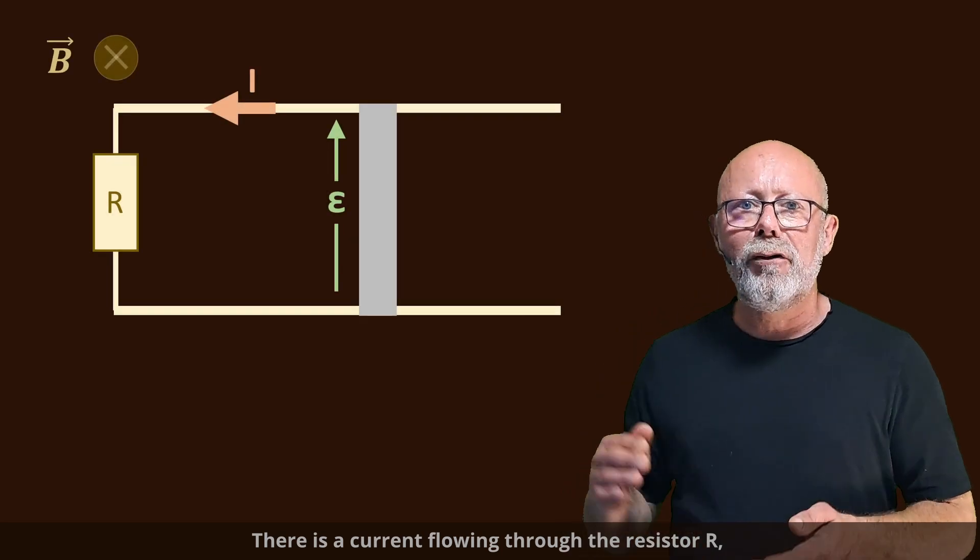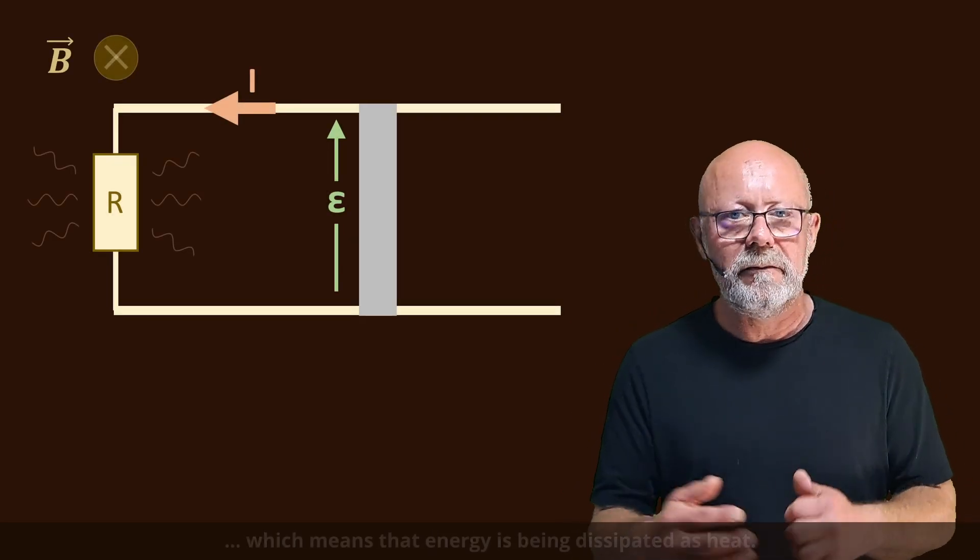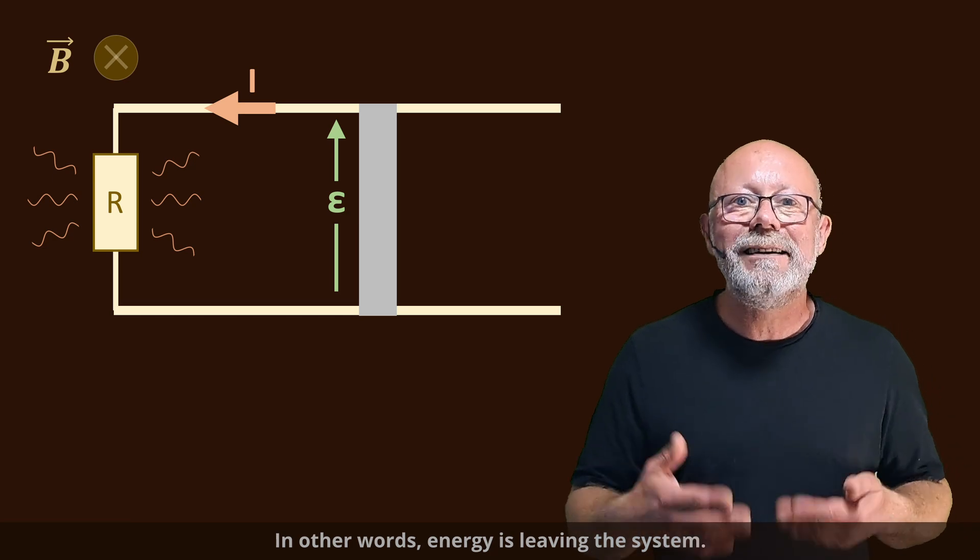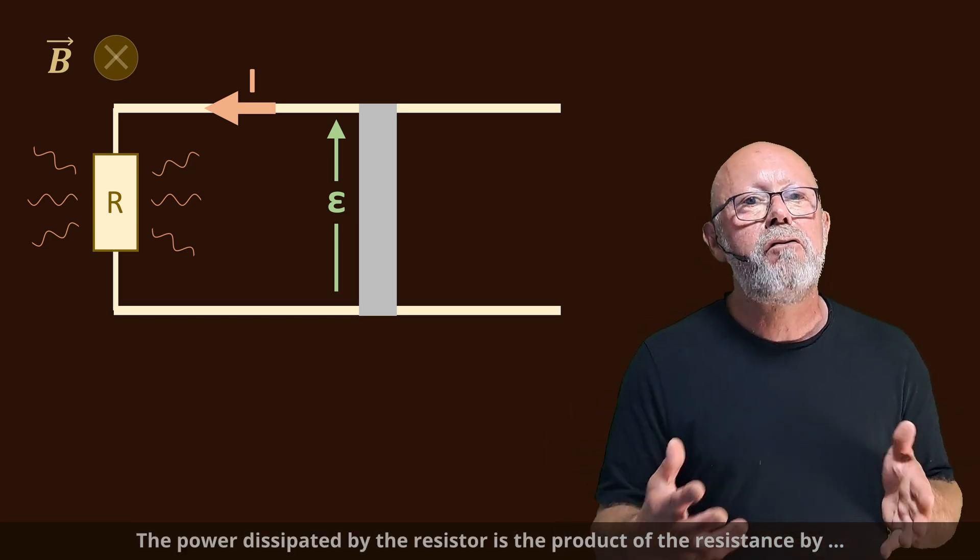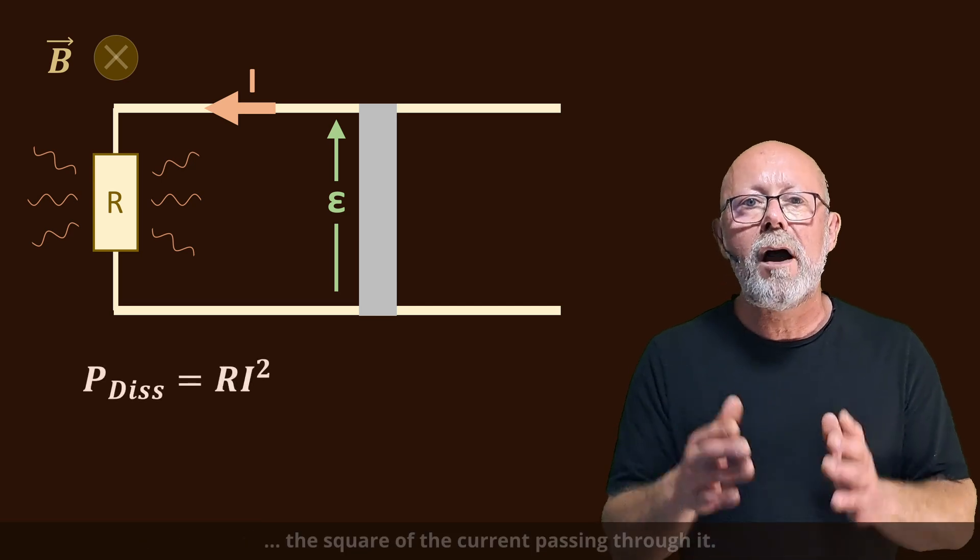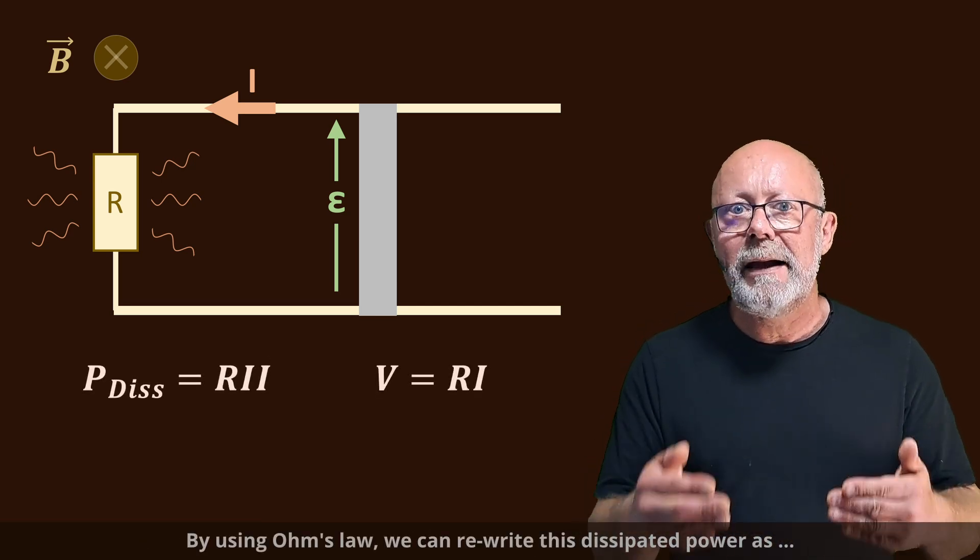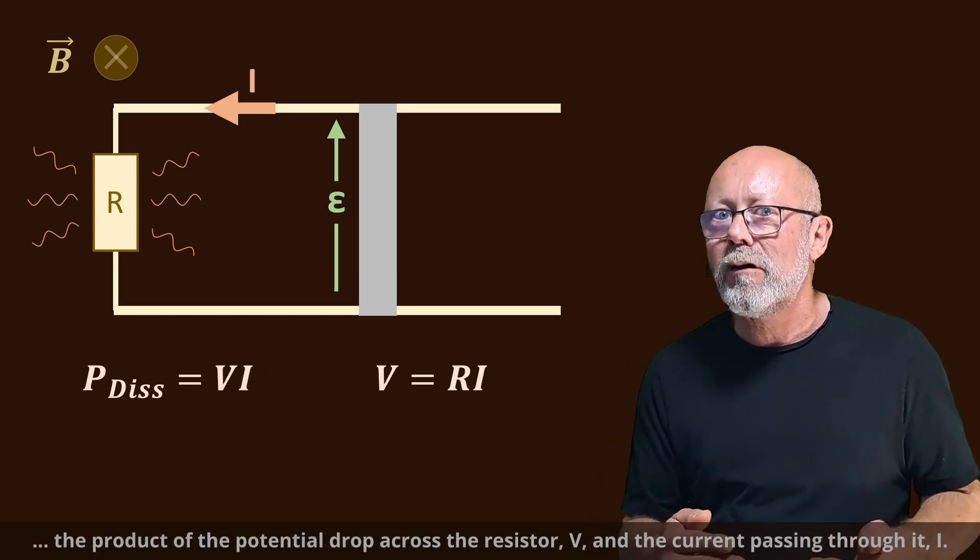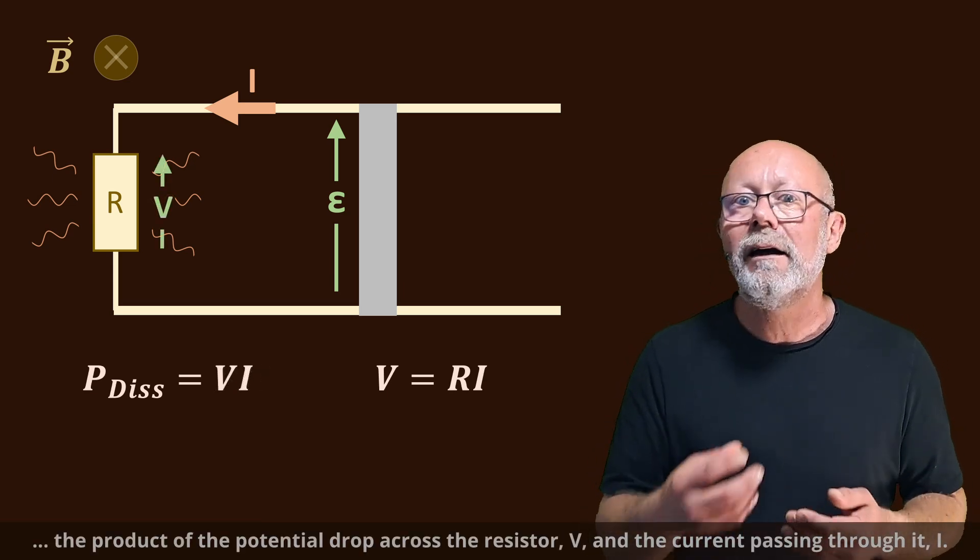Let's look at our setup from an energy perspective. There is a current flowing through the resistor R, which means that energy is being dissipated as heat. In other words, energy is leaving the system. The power dissipated by the resistor is a product of the resistance by the square of the current passing through it. By using Ohm's law, we can rewrite this dissipated power as a product of the potential drop across a resistor V by the current passing through it, I.